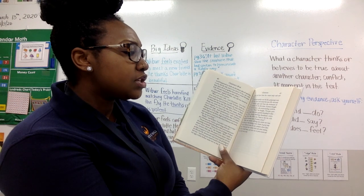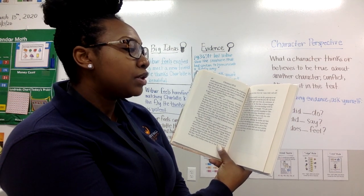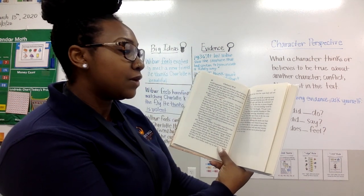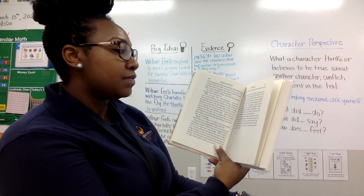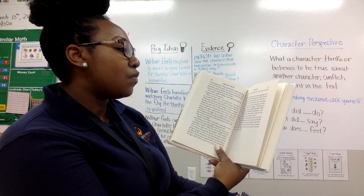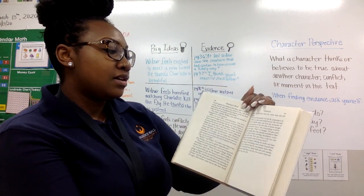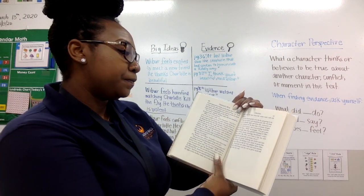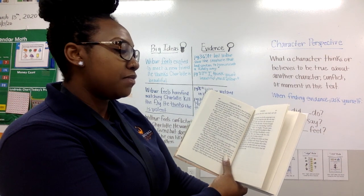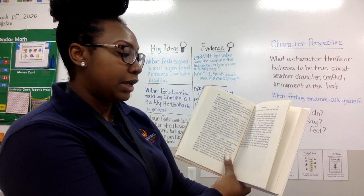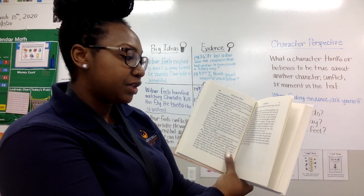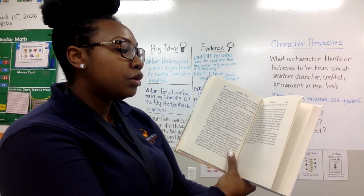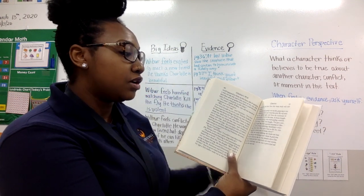Good. Let's keep reading. Charlotte stood quietly over the fly, preparing to eat it. Wilbur lay down and closed his eyes. He was tired from his wakeful night and from the excitement of meeting someone for the first time. A breeze brought him the smell of clover, the sweet-smelling world beyond his fence. 'Well,' he thought, 'I've got a new friend, all right. But what a gamble friendship is. Charlotte is fierce, brutal, scheming, bloodthirsty — everything I don't like. How can I learn to like her? Even though she's pretty and, of course, clever.'